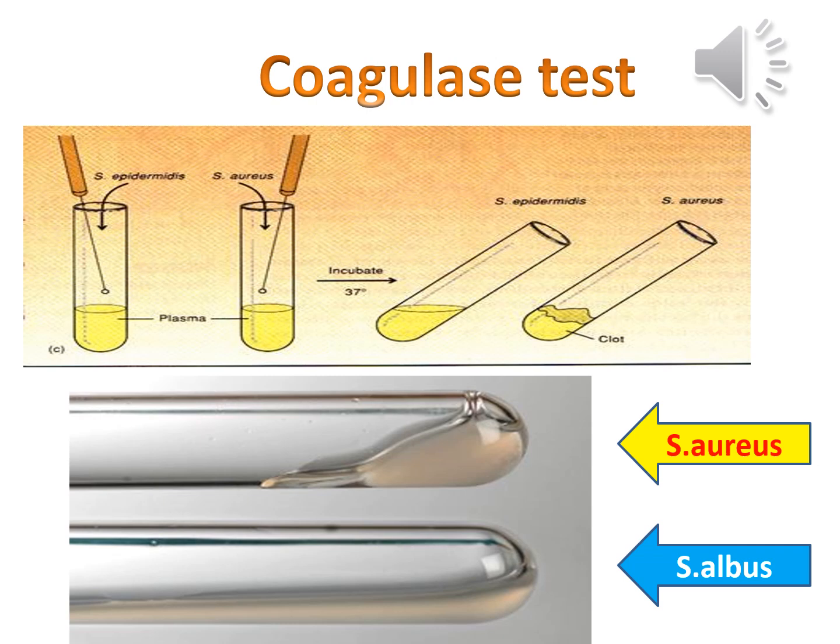The coagulase test is used to differentiate Staphylococcus aureus (coagulase-positive) from coagulase-negative Staphylococcus species. Coagulase is an enzyme produced by S. aureus that converts soluble fibrinogen in plasma to insoluble fibrin. A suspension of the organism is incubated with plasma at 37°C in a tube; clot formation within 4 hours indicates a positive result. Negative tubes should be left at room temperature overnight and re-examined, as some strains of S. aureus including many MRSA produce a delayed clot that is rapidly lysed at 37°C.